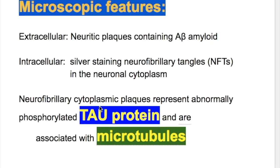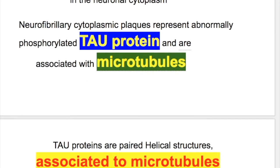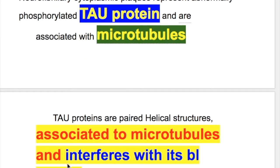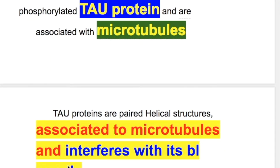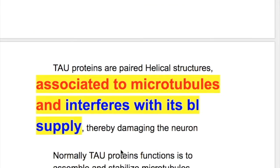Neurofibrillary cytoplasmic tangles represent abnormally phosphorylated tau proteins associated with microtubules. Tau proteins form paired helical structures associated with microtubules and interfere with blood supply, thereby damaging the neuron.